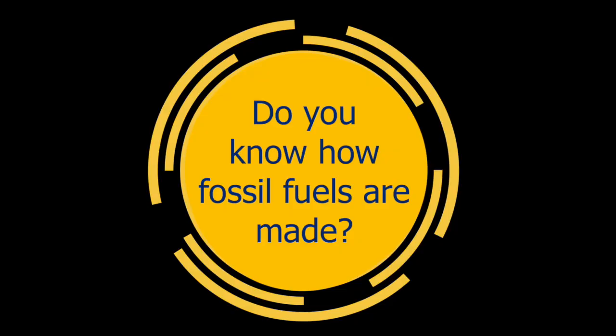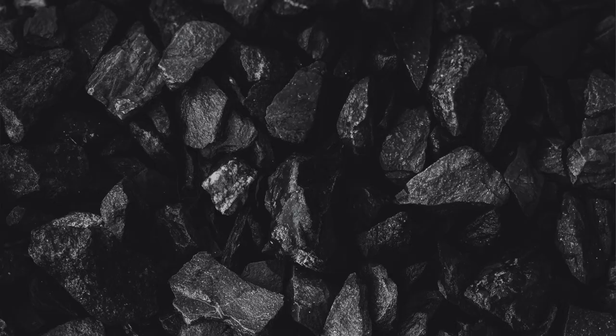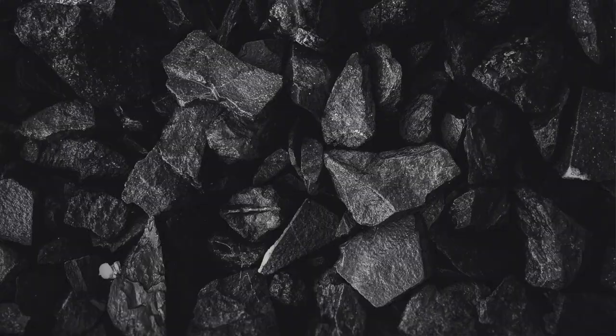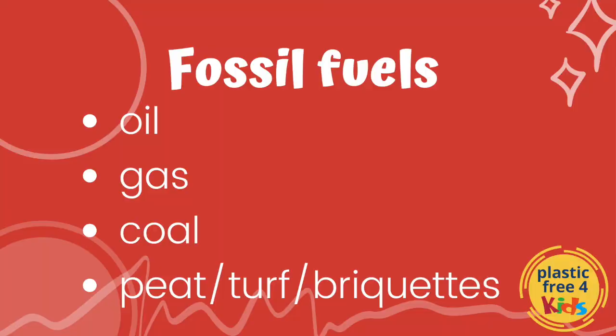So, where were we? That's right, we were talking about fossil fuels. Do you know how fossil fuels are made? Over millions of years, the remains of the plants and animals that used to live on our planet have been compressed and compacted way down under layers of soil and earth and even water. And over that time, they have become fossil fuels — like oil, gas, coal, peat, or what we might call turf.